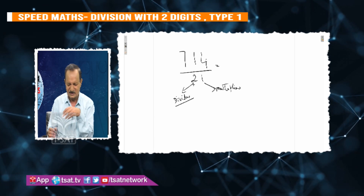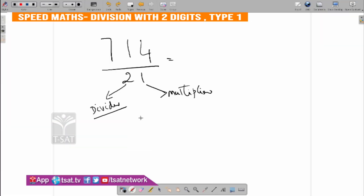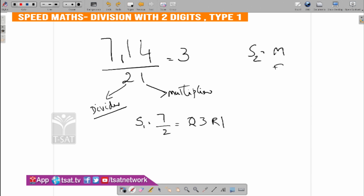Step 1 is: 7 divided by 2. Seven by 2 — the quotient is 3, and the remainder is 1. This is Step 1. Step 2 is: multiply, subtract, divide. This system is the complete same system for any division.